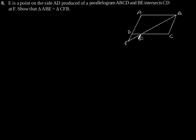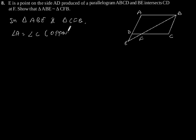BE intersects CD at point F. So here in triangle ABE and triangle CFB, angle A is equal to angle C since they are opposite angles of a parallelogram.